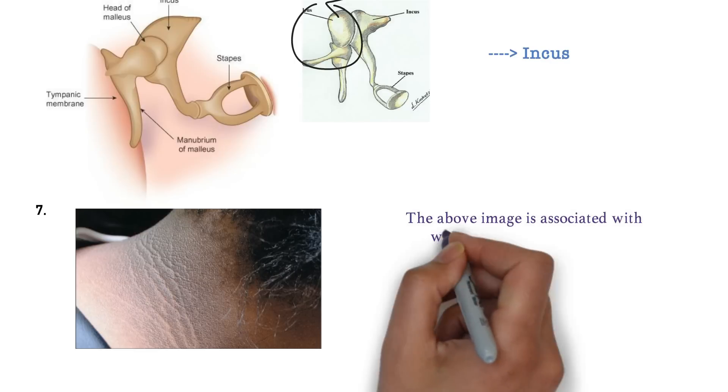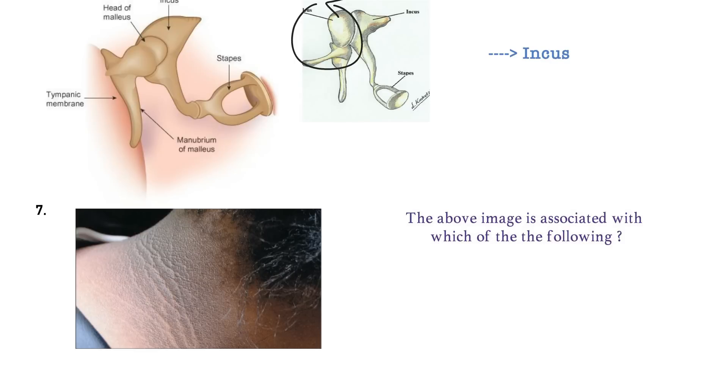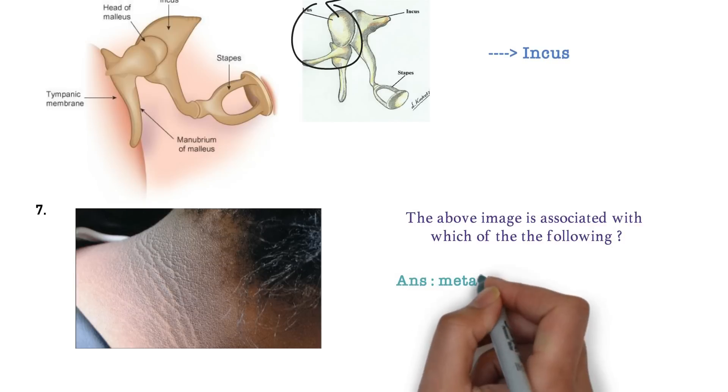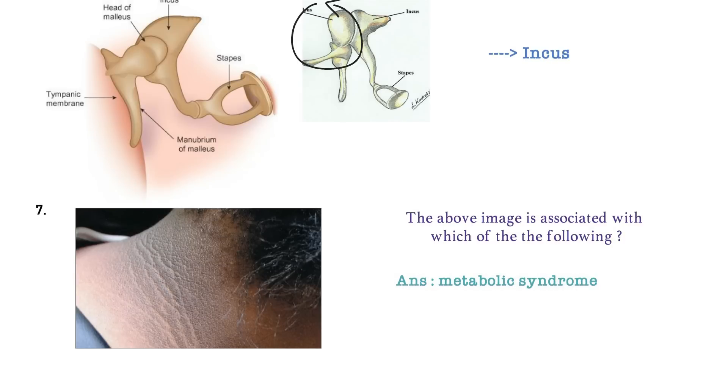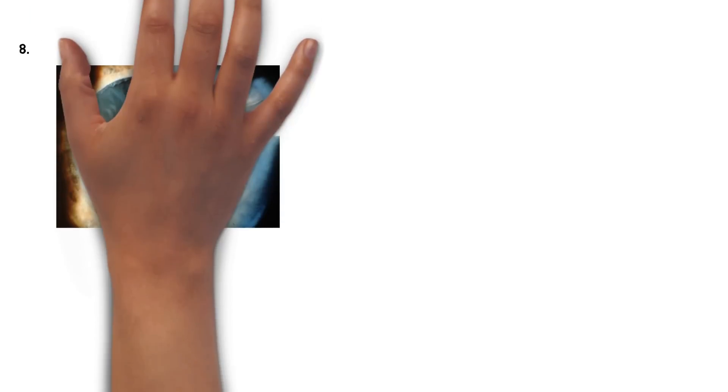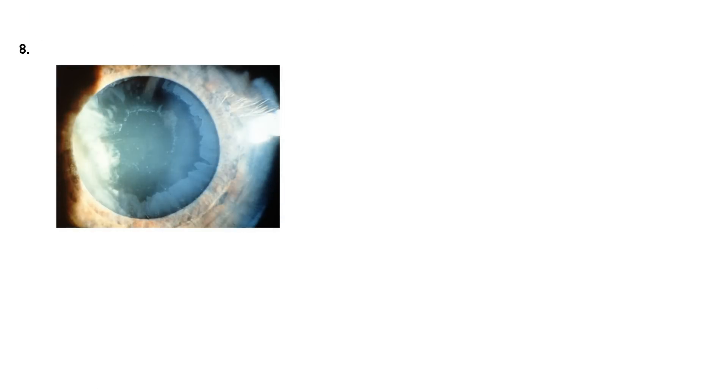The seventh question: look over here, this is the image and clinical finding. The question is: the above image is associated with which of the following condition? It is associated with metabolic syndrome. It is also called acanthosis nigricans, usually seen in back of the neck and underarms.